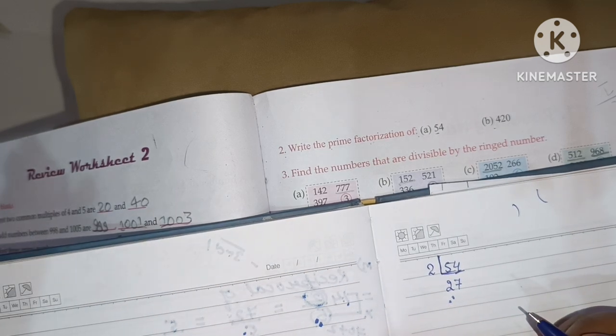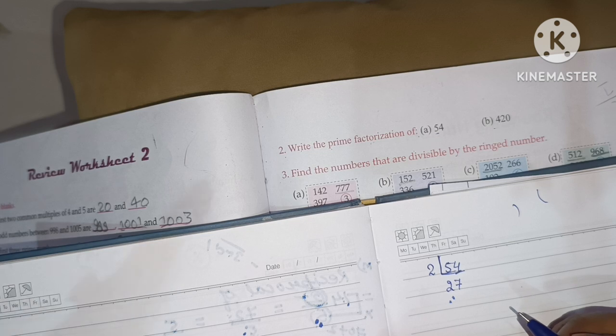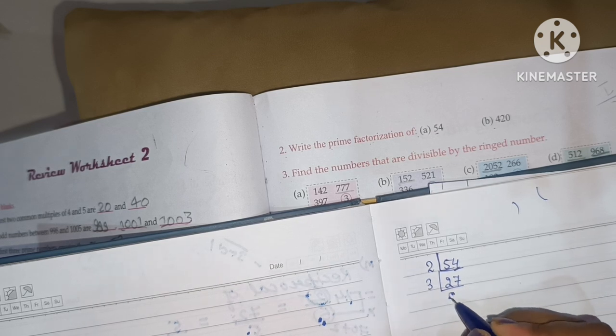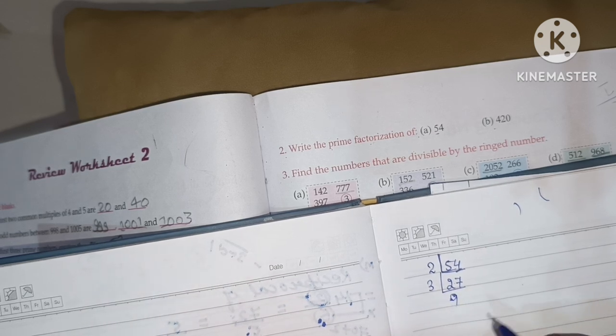Now, 27 is not divisible by 2. So, we will divide it by 3. 3 is also a prime number. After dividing 27 by 3, we will get here 9.